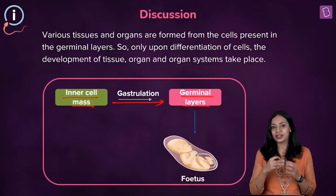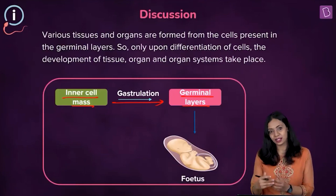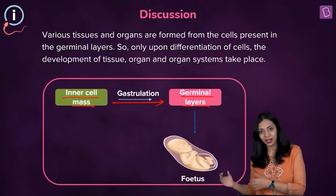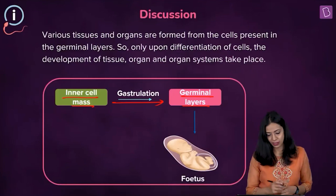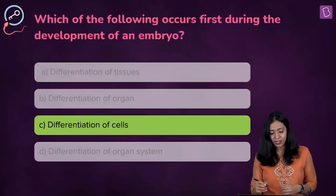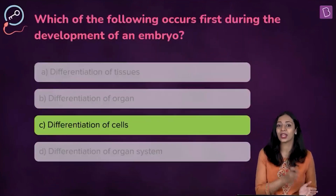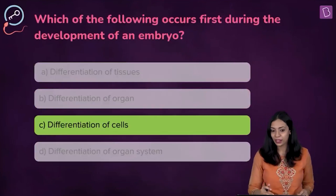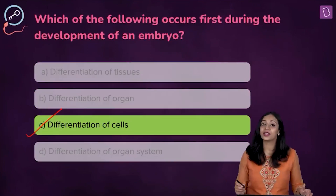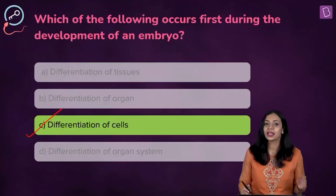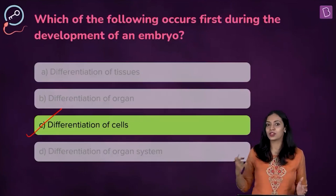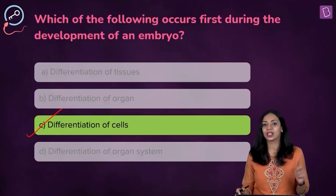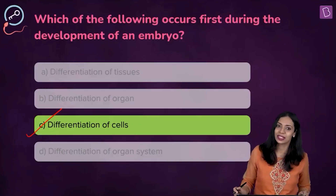Each of the cells in these three germinal layers will differentiate to give rise to different tissues, organs, and organ systems. So what happens first during embryogenesis is the differentiation of cells, and only later do differentiation of tissues, organs, and organ systems take place. The correct answer is option C.